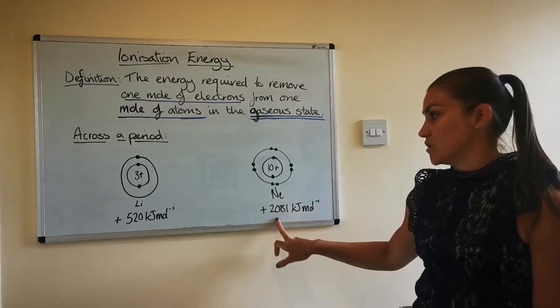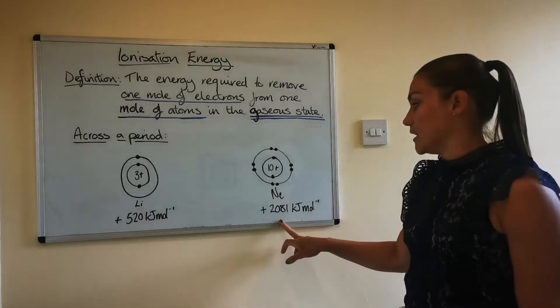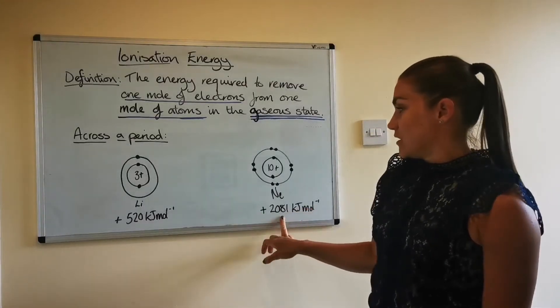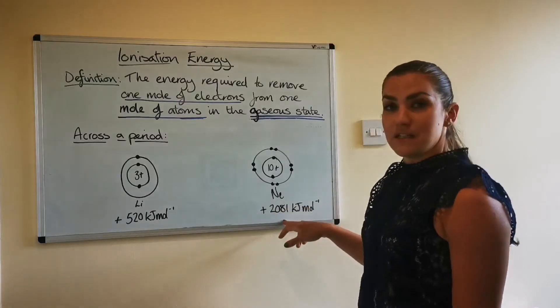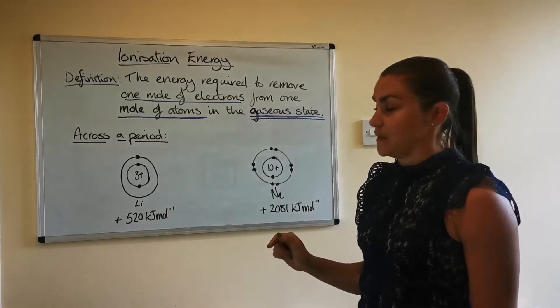And if you wanted to do the same thing to neon, one mole of neon atoms, you would need to put in 2081 kilojoules per mole. So that's a big difference. So from this you can see that as you go across the period, the ionization energy increases for an element, the first ionization anyway.